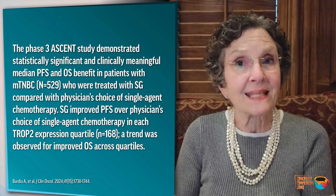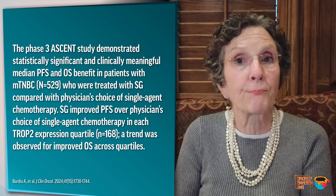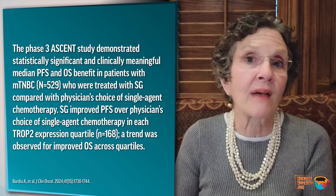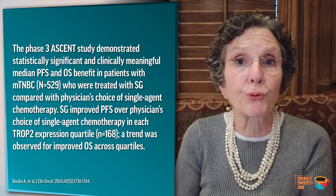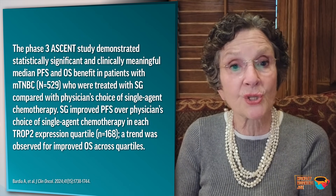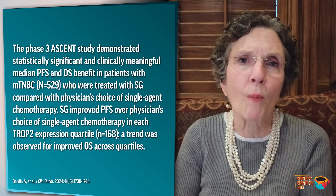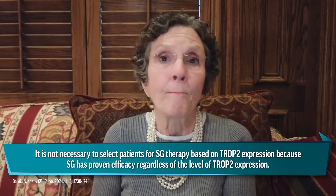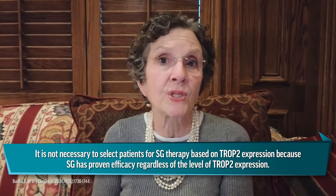Let's look at the sacituzumab govitecan trials, starting with TROPICS-02. This is in HR positive HER2 negative metastatic breast cancer patients, where SG showed statistically significant benefit over chemotherapy of physician's choice with a 3.2-month improvement in median overall survival in favor of sacituzumab with a manageable safety profile. The phase 3 ASCENT trial focused on metastatic TNBC patients and showed that SG improved PFS as well as overall survival compared to chemotherapy of physician's choice regardless of the level of Trop-2 expression — from the highest to the lowest expression, SG was more effective than cytotoxic chemotherapy.